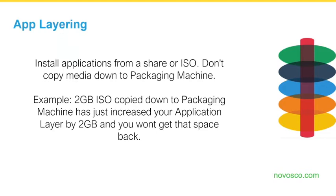This was a point made by Ron Oglesby from Citrix at Citrix Synergy recently, and it makes sense. If you have, for example, Office 2016 and you're creating an app layer, and you copy the ISO file — which could be one, two, or three gigabytes — to the packaging machine, your application layer disk will immediately expand to that size. You really want to make the application layer as small as possible, so run installers from a network share to avoid unnecessarily expanding the layer.